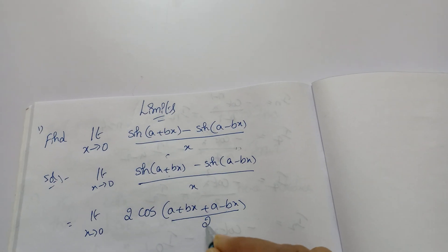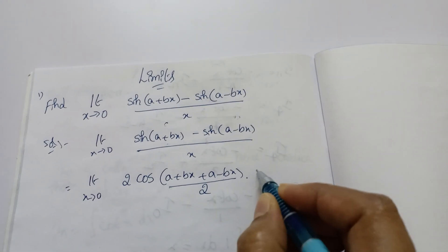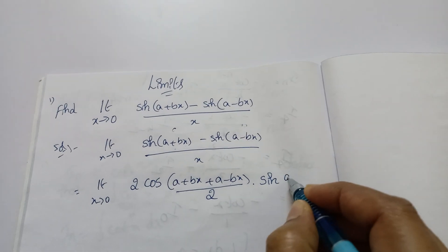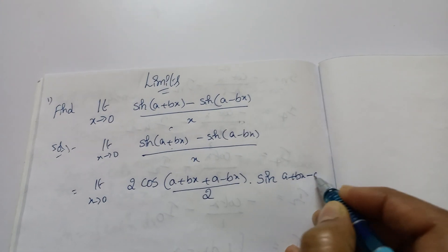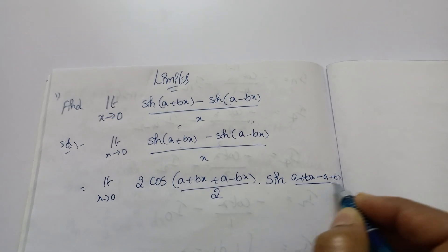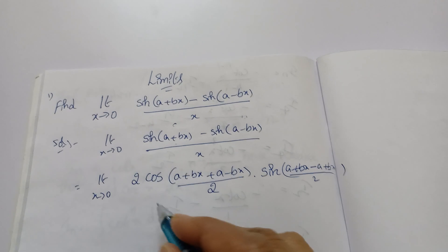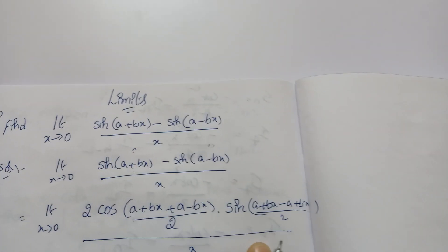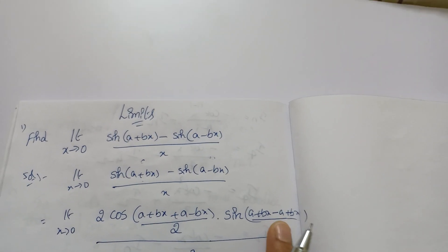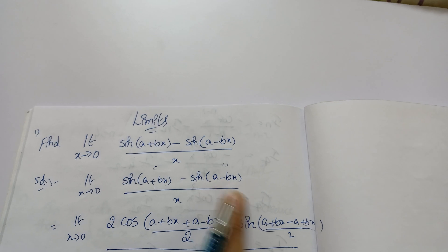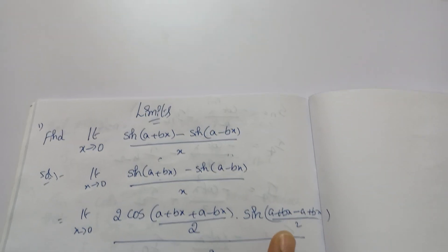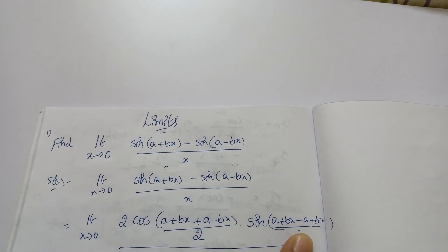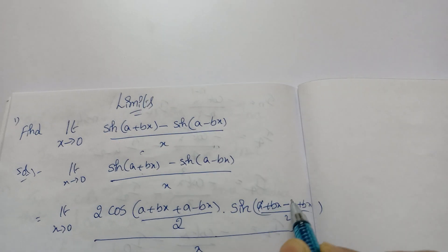So 2·cos[(C + D)/2] — don't forget the divide by 2 — into sin[(C − D)/2], which means (a + bx) − (a − bx) divided by 2, all divided by x. One important thing: sin[(C − D)/2] means minus of that second term, so minus a minus gives plus bx. Don't forget: whenever there's a minus sign, compulsory write brackets or multiply those terms.